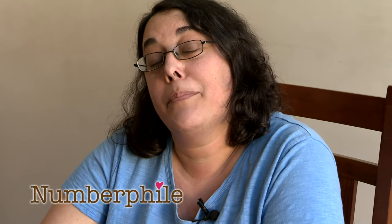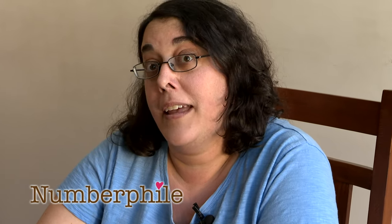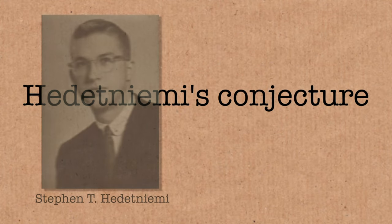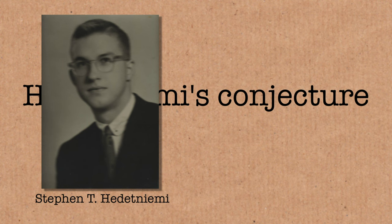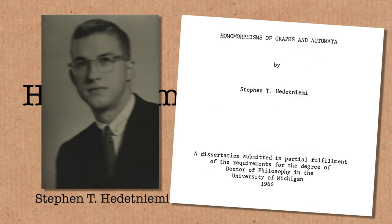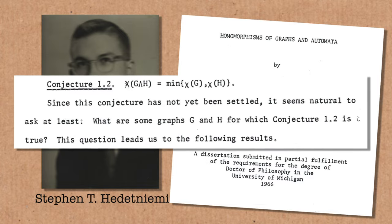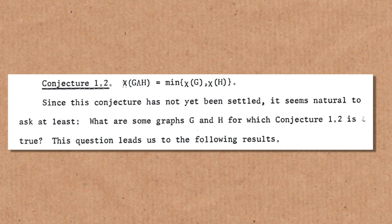We're going to be talking about a problem in graph theory that was unsolved for more than 50 years, and very recently someone solved it, so people are very excited about this. It is called Hedetniemi's Conjecture, named after the mathematician who first came up with it in 1966 — I believe it was part of his doctoral dissertation. He conjectured this result about graph theory, and for more than 50 years people tried to prove it, they tried to disprove it, and no one seemed to be able to make any headway. But now we know it is not true.